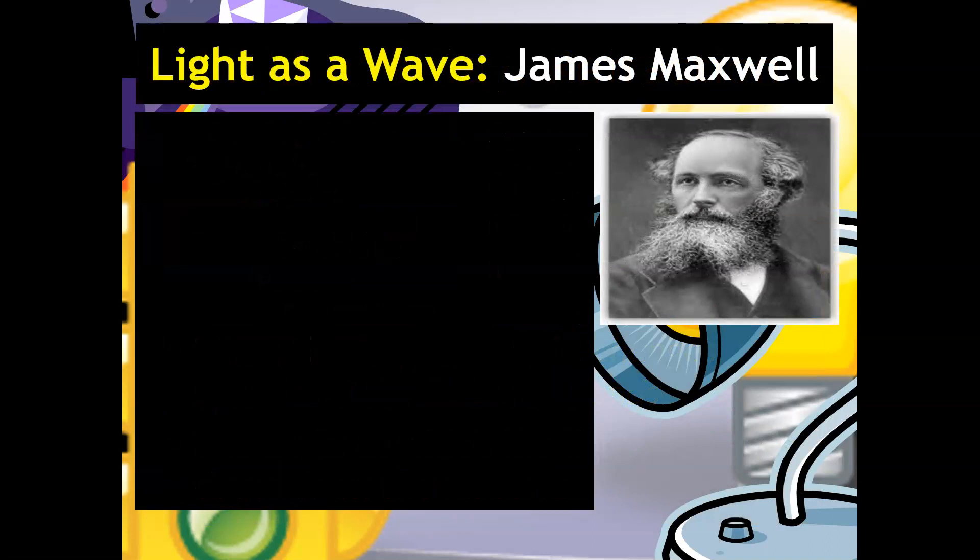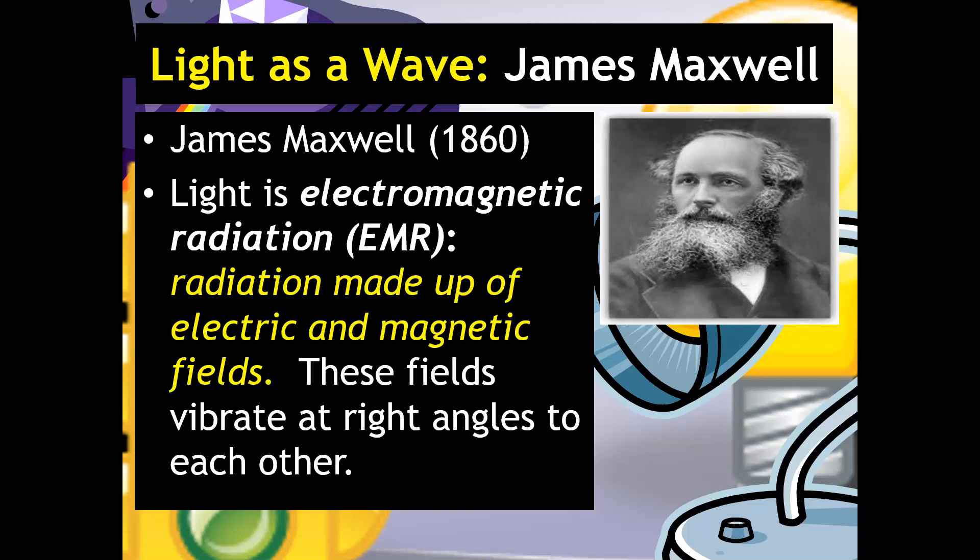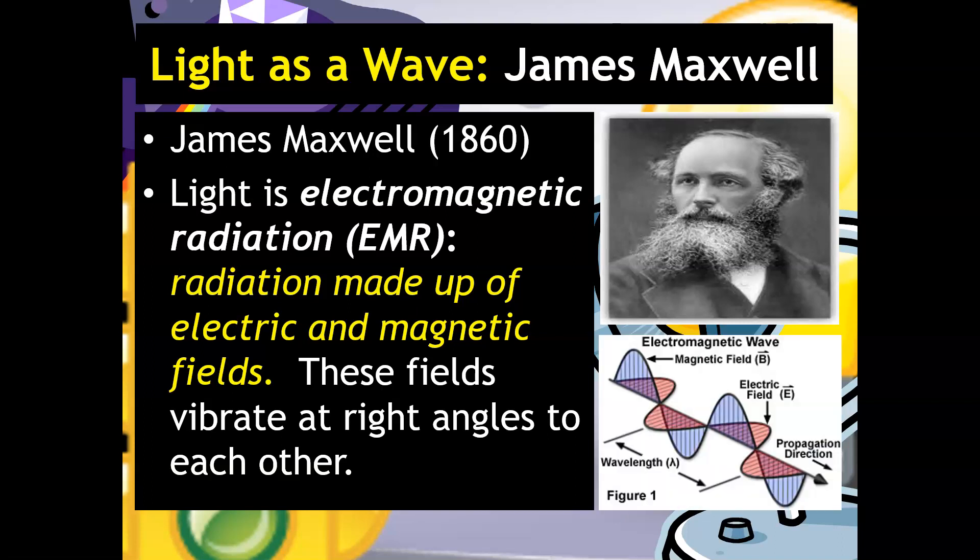So let's inspect a little bit light as a wave. So we already talked about light as a ray. So as we move on to light as a wave, we need to talk about James Maxwell. So James Maxwell, around 1860, he defined light as electromagnetic radiation. And usually the abbreviation you'll see is EMR. And this is radiation that we say is made up of electric and magnetic fields. These fields vibrate at right angles to each other. So that is an image that looks kind of similar to describing this. It's a model to help us understand that. And this I think would make more sense when you move on to taking more like physics classes. But for right now, this is all you really have to know.